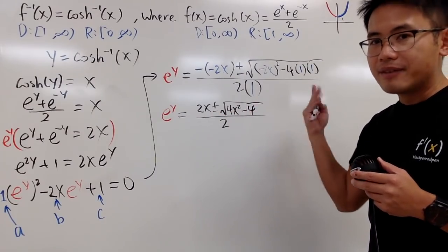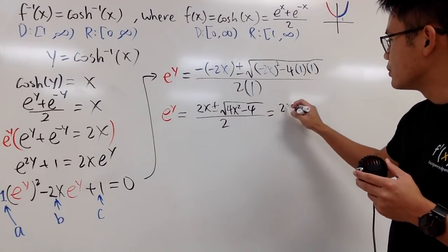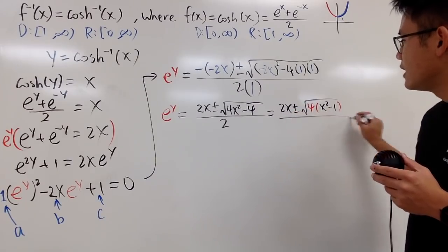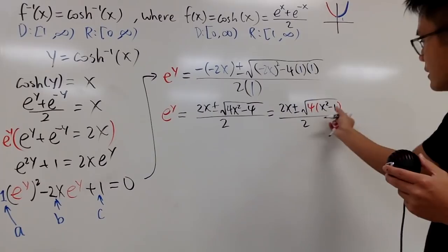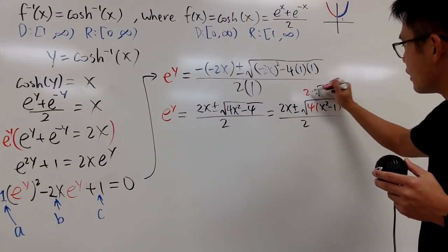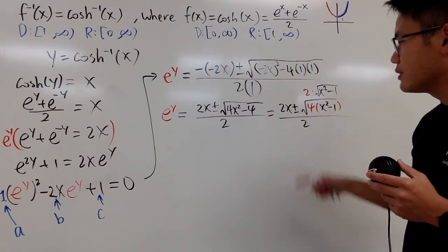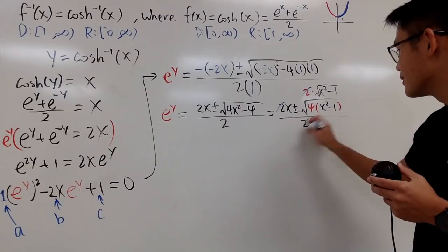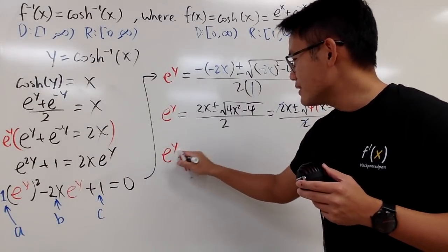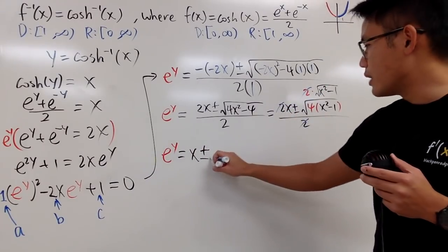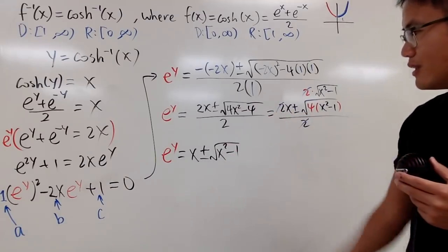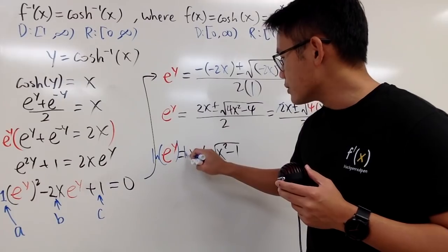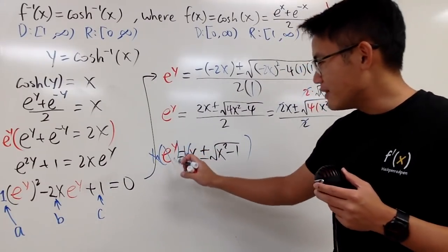Both terms in the numerator and the denominator share a factor of 2 — factor out 4 from under the radical to get 2√(x² − 1), then cancel the 2s. So e to the y equals x plus or minus square root of x squared minus 1. Taking the natural log of both sides, y equals ln(x ± √(x² − 1)). However, we still need to resolve the plus or minus.